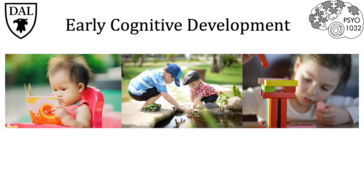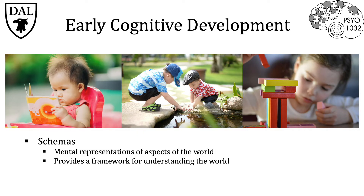He viewed all children as actively constructing knowledge about the world by forming schemas with new experiences. Schemas are very important — they're mental representations of aspects of the world which provide a framework for understanding the world. There are two important mechanisms for schema formation: assimilation and accommodation.